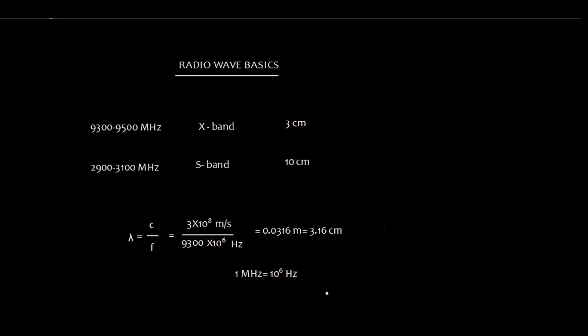Just to know why it is called 3 centimeter, there is a formula lambda is equal to, that is, wavelength is equal to C over F. And C is the velocity of light or electromagnetic waves, that is, 3 into 10 raised to the power 8 meter per second. F is the frequency.